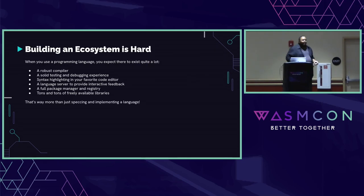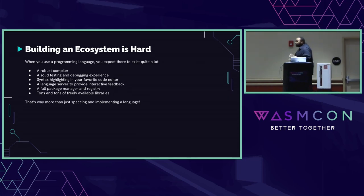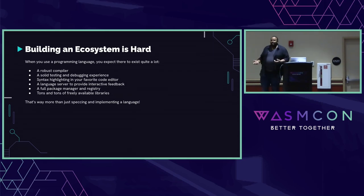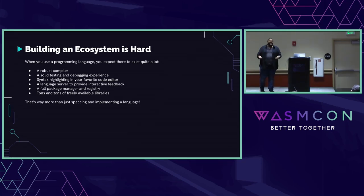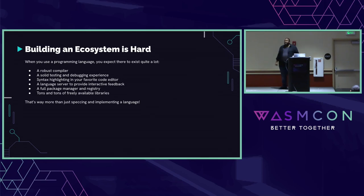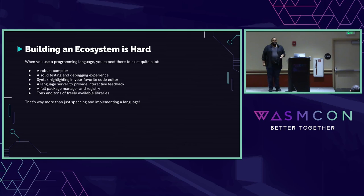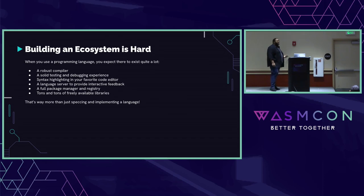This has worked out really well - folks like the language, and that's great. But building an ecosystem is really freaking hard. When you use a programming language, you really expect there to be quite a lot. The first, of course, is a robust compiler. When you write some code, you really do expect that code will compile into a binary that will run and do the things you told it to. Second is a solid testing and debugging experience - you expect to be able to actually figure out what's going wrong with your code, and not be left stranded with nowhere to actually debug.